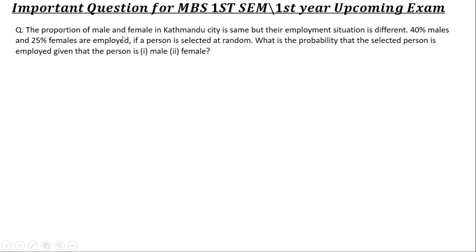The question is: the proportion of male and female in Kathmandu city is the same, but their employment situation is different. 40% of males and 25% of females are employed. If a person is selected at random, what is the probability that the selected person is employed, given that the person is male or female?